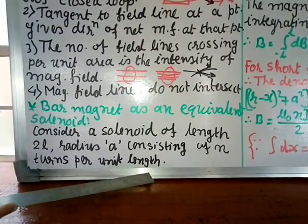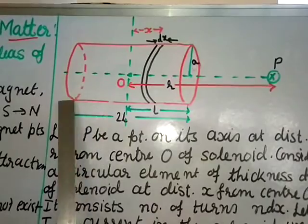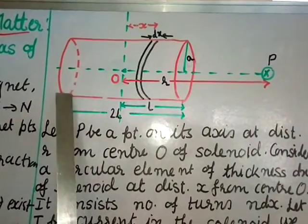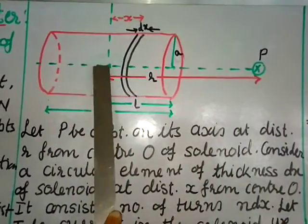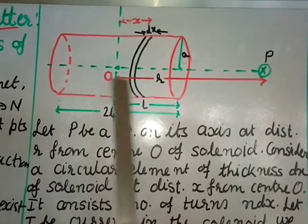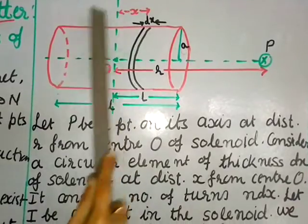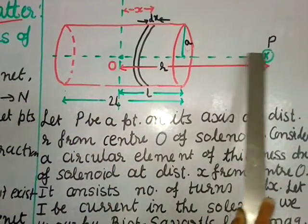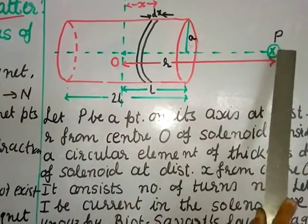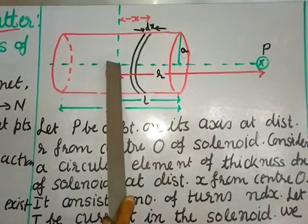In this figure, this is a solenoid of length 2l, so the total length is 2l. This is the axis of the solenoid, and this is the center of the solenoid, call it O. The radius of the solenoid is a, and the number of turns per unit length is n.